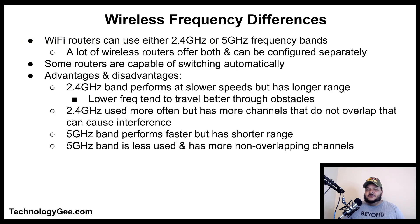A lot of wireless routers offer both frequencies that can be configured separately. Some routers are even capable of being switched between the two frequencies automatically if a signal becomes weak. Each frequency has its own advantages and disadvantages.